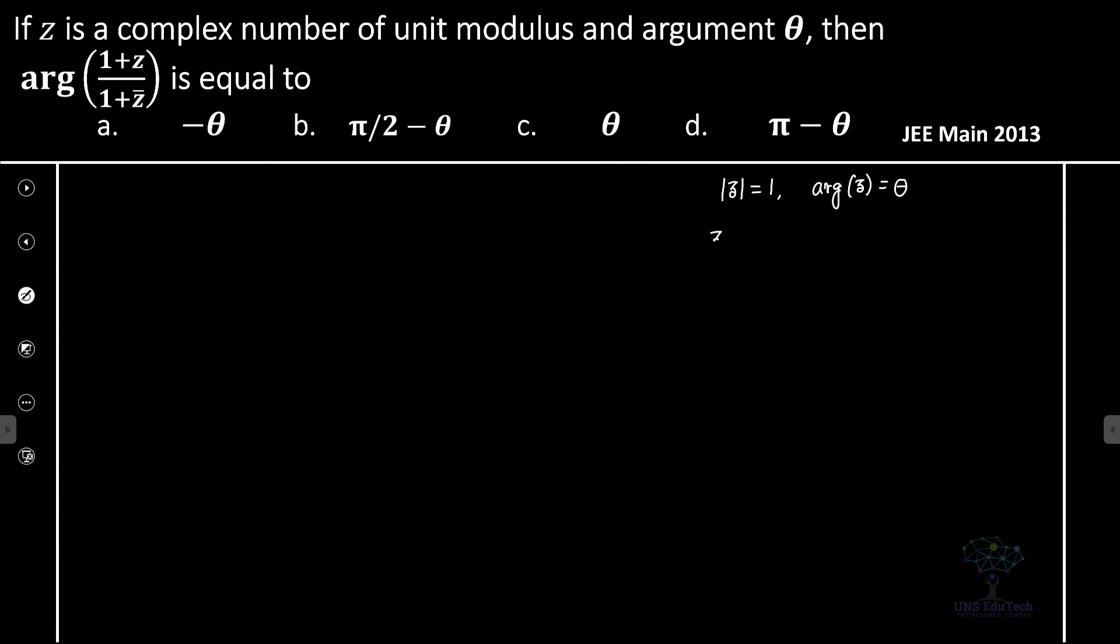So using the polar representation, we can write z is equal to cos theta plus i sine theta.